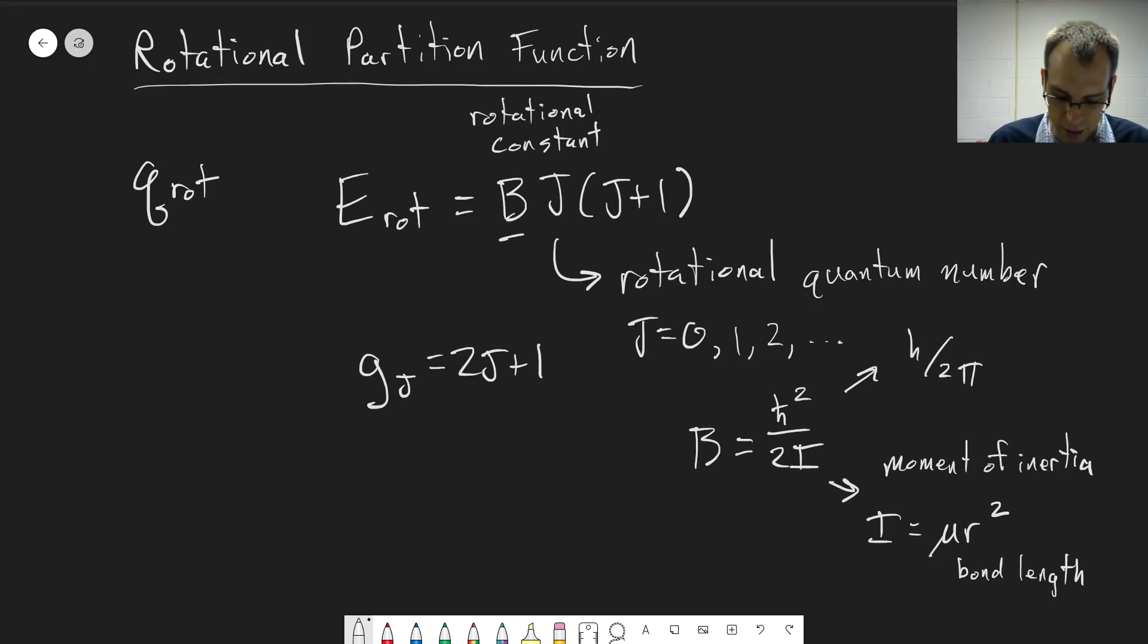And we can go ahead and say that q rotational is equal to the sum over all those different energy levels, j equals 0 up to infinity, times our degeneracy. So I'll just explicitly put that in here, 2j plus 1, times e to the minus beta times B times j times j plus 1. And that's it. That is our rotational partition function.